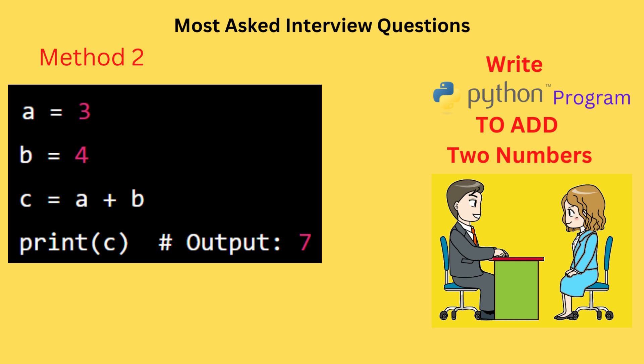This code sets the variables a and b to the values 3 and 4 respectively, and then adds them using the plus operator. The result is stored in the variable c and printed to the console.